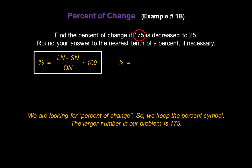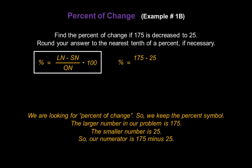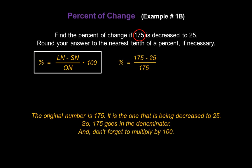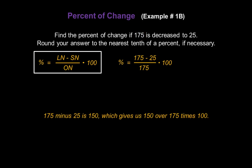The larger number is 175, so I'll replace Ln with 175. The smaller number is 25, so I'll replace Sn with 25. Our numerator is 175 minus 25. The original number is 175 — it's the one being decreased to 25 — so I'll replace On in the denominator with 175. Don't forget we have to multiply by 100 so our answer is a percentage. Now let's go ahead and start solving: 175 minus 25 is 150, so we get 150 divided by 175 times 100.